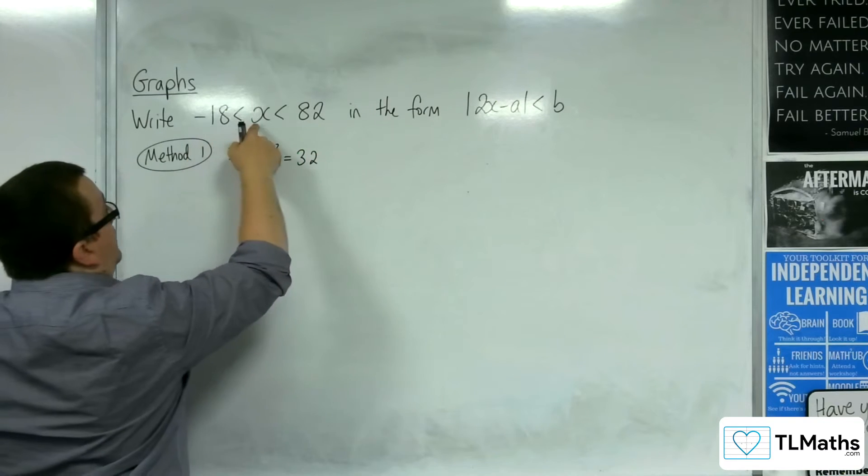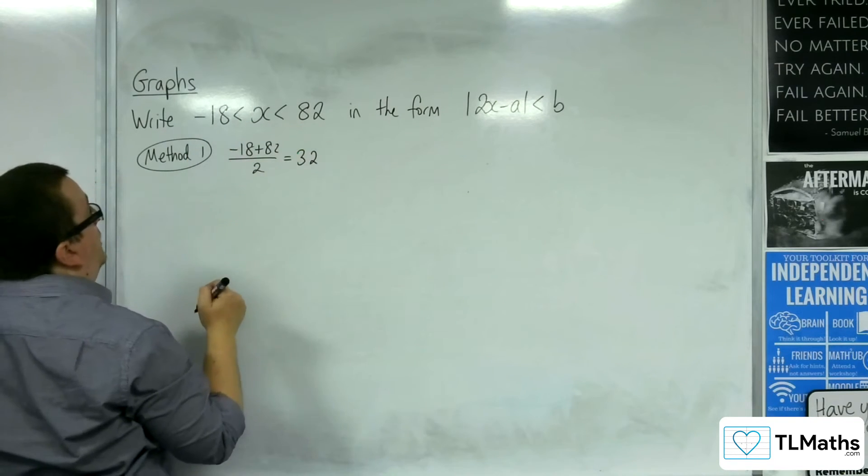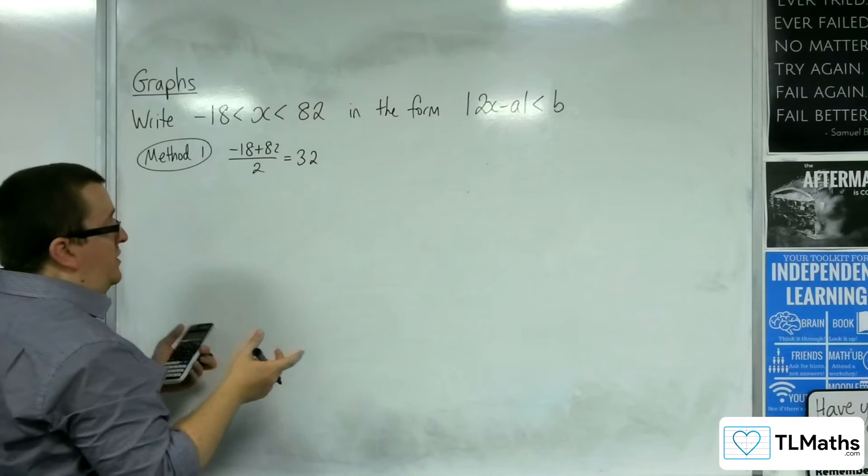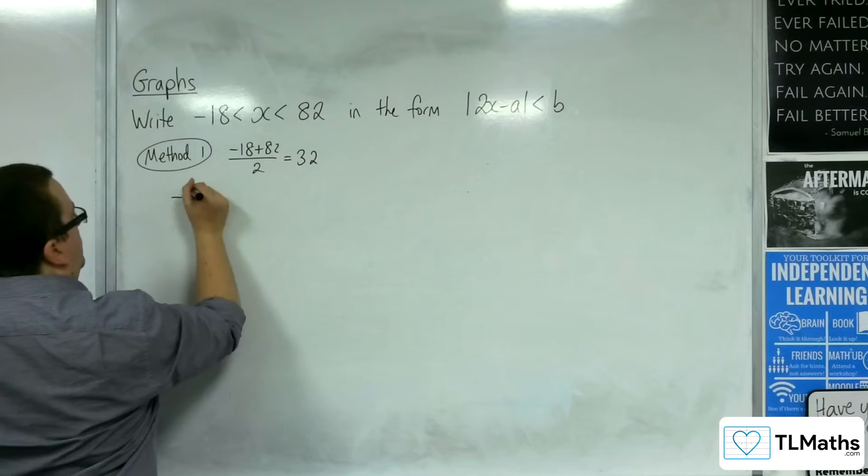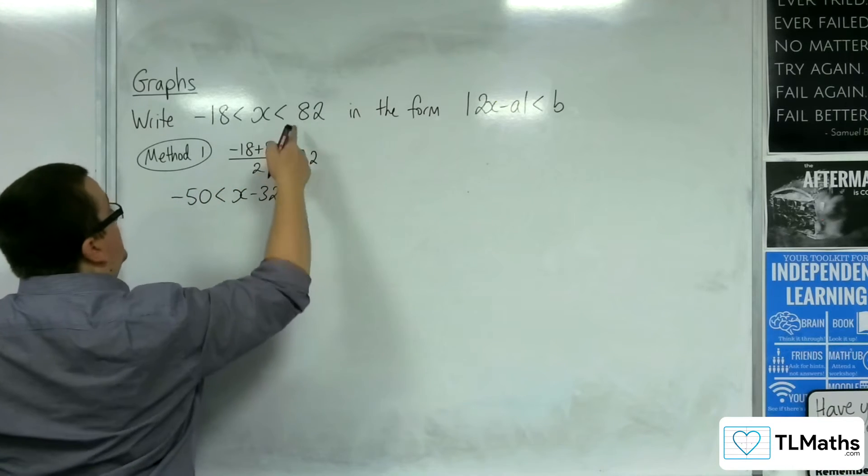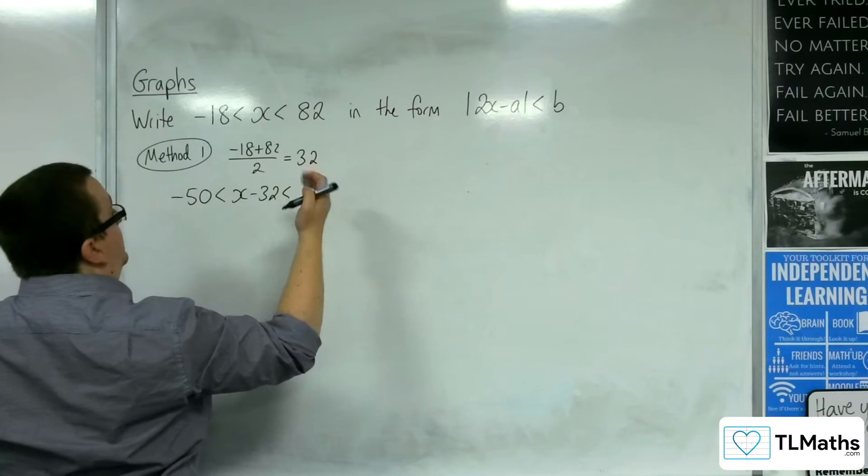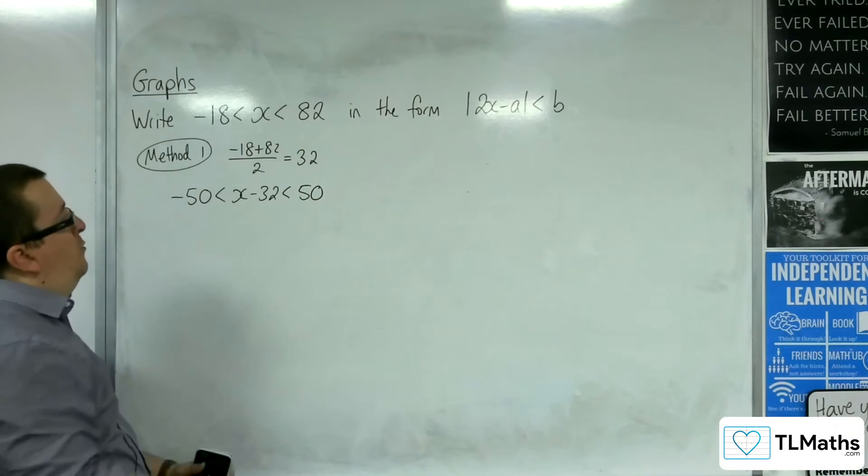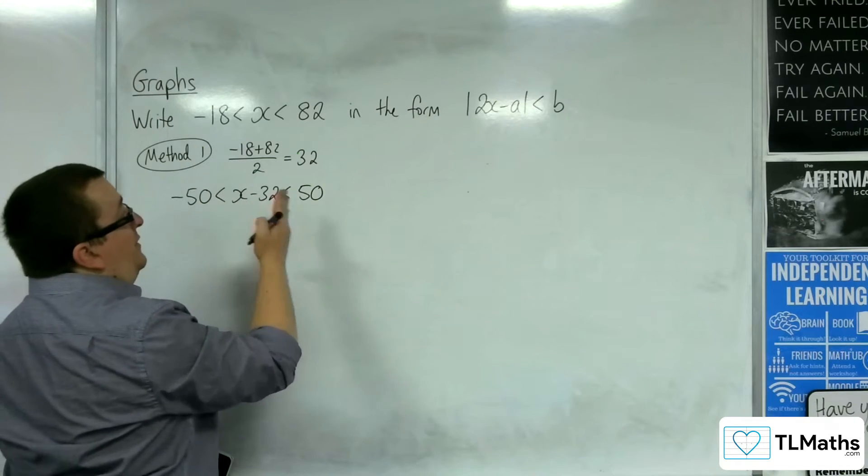Then I'd have to subtract 32 from each side of the inequality. So, -18 take away 32 is -50. We'd have x - 32. And 82 take away 32 will get me 50.